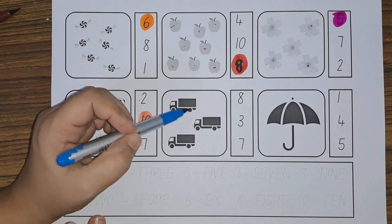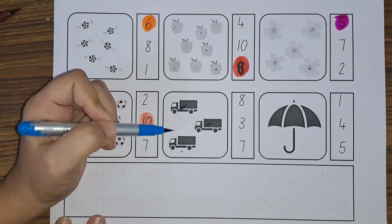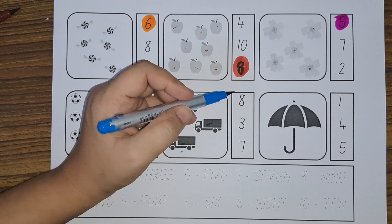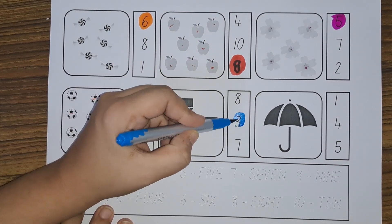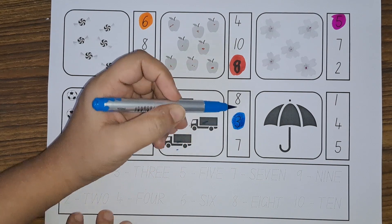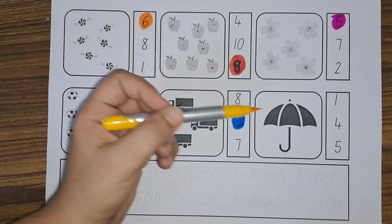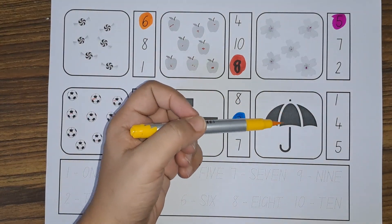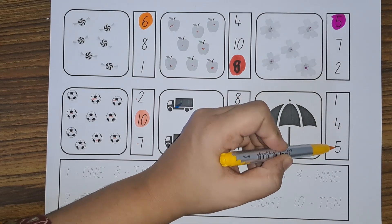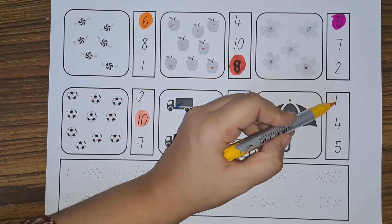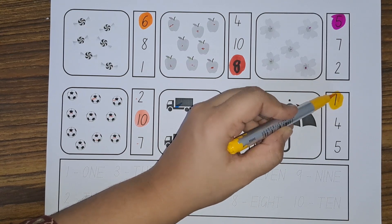Let us count the trucks: one, two, three. Three trucks. Let us circle the number three. Next we have umbrella. How many umbrellas do you see? One umbrella. Is this one? Yes. Let us circle the number one.